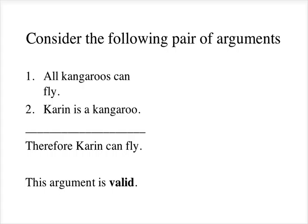This argument is valid. Recall the definition of validity: an argument is valid if, given that all the premises are true, then the conclusion must also be true. So we can see that this fits the definition of validity. If all the premises are true — so if it was true that all kangaroos could fly, and if it was true that I was a kangaroo — then it would have to be true that I could fly.